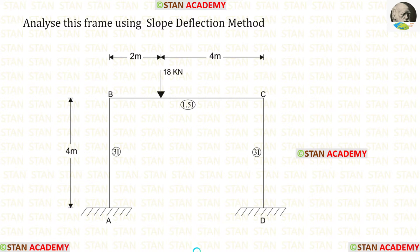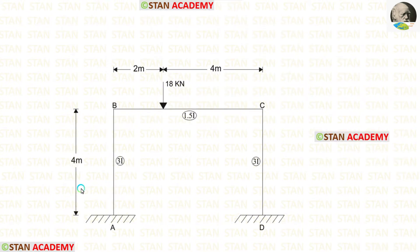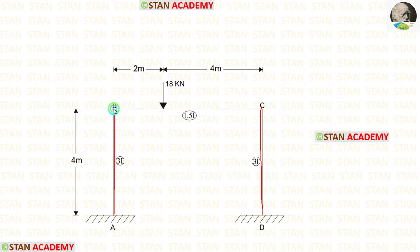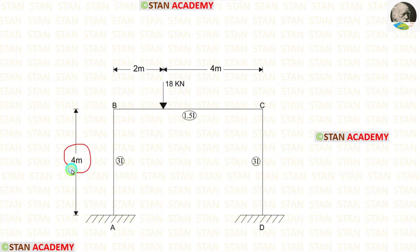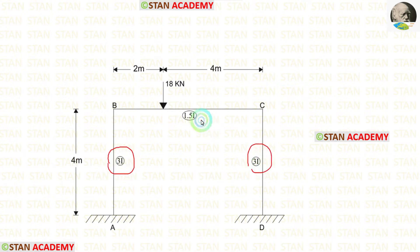Before analyzing, let us see the frame. In this frame, there are two columns: column AB and column DC. Also, there is a beam BC. In the columns there are no loads. In the beam BC, there is an eccentric point load of 18 kN acting at a distance of 2 m from point B. The length of the columns is 4 m and the length of beam BC is 6 m. The moment of inertia for the columns is given as 3i, and the moment of inertia for the beam is given as 1.5i.